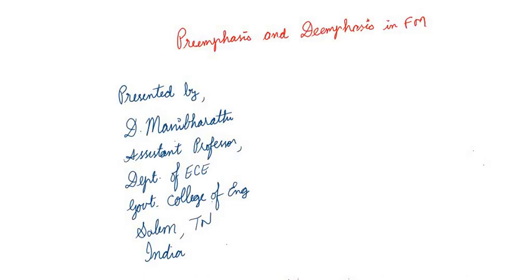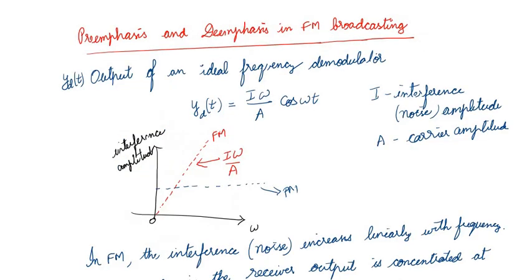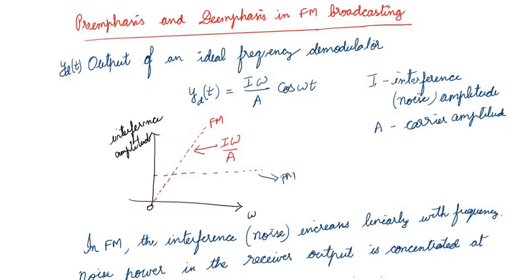Hi and hello to everyone. In this video we are going to discuss pre-emphasis and de-emphasis in frequency modulation. In the last video we discussed about the interference of noise in the carrier signal. If y_d(t) is the output of an ideal frequency demodulator, we got the expression: y_d(t) = (I·ω / A)·cos(ωt), where I is the noise amplitude and A is the carrier amplitude. This is for frequency demodulation.